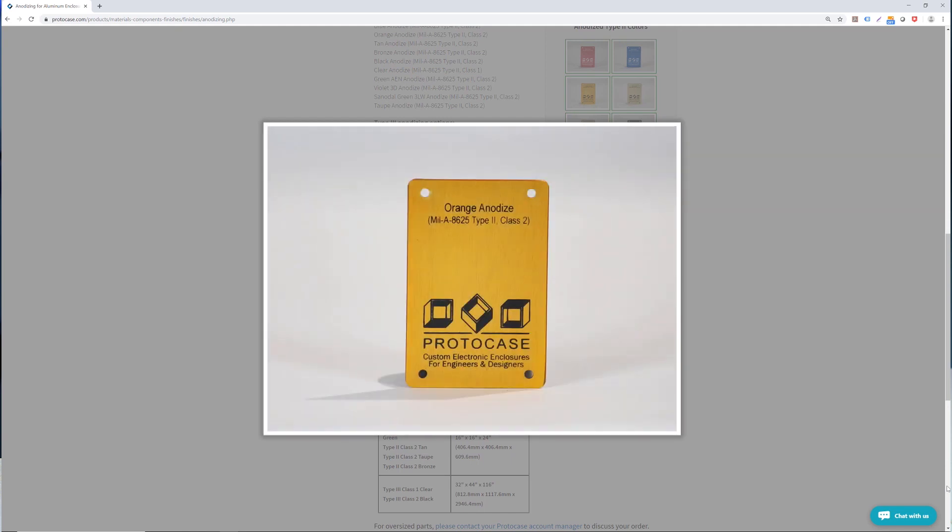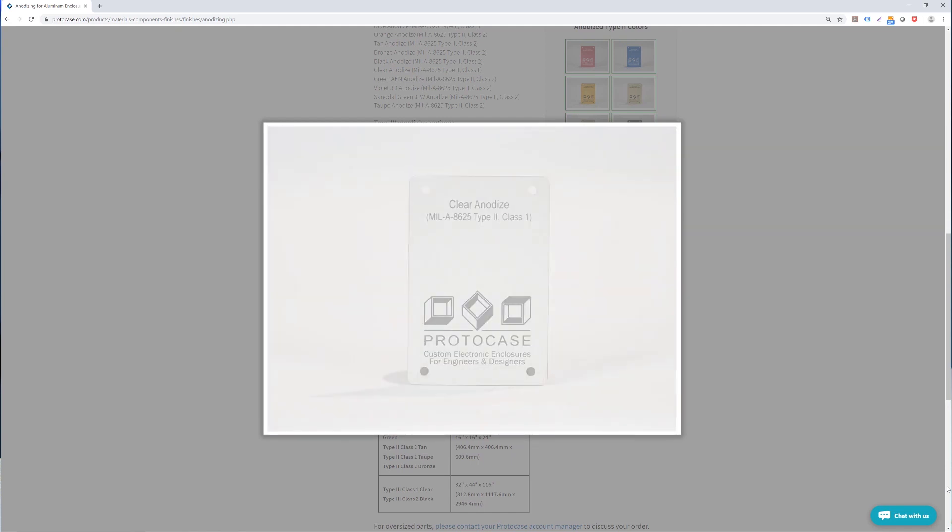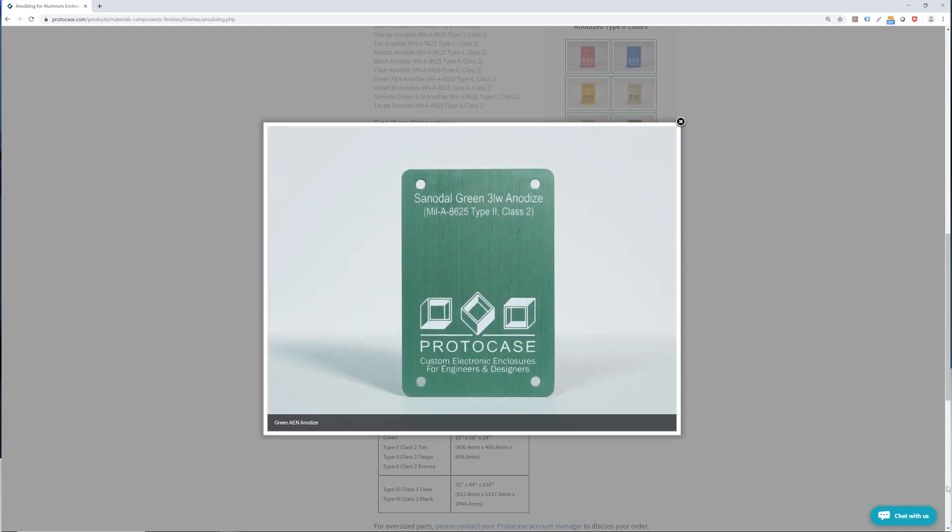Anodizing also just gives you a really striking look, and there's actually a lot of colors you can choose from. There's even a vibrant green and violet, which fall under Type 2 anodizing.